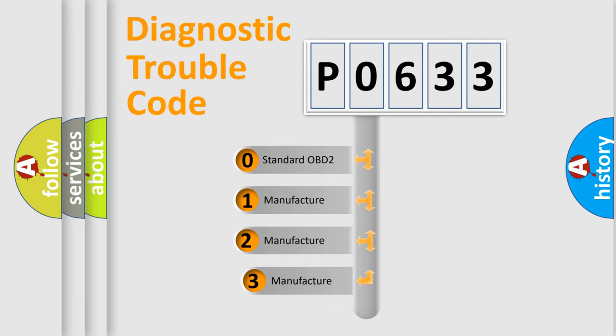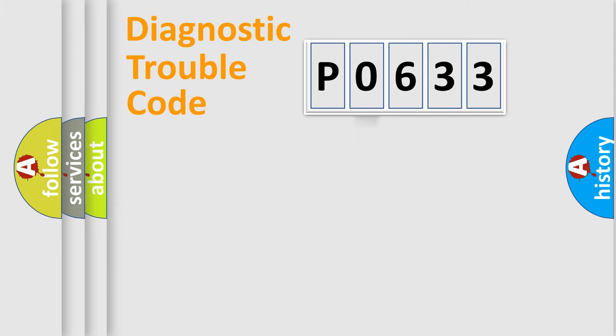If the second character is expressed as 0, it is a standardized error. In the case of numbers 1, 2, or 3, it is a more prestigious expression of the car-specific error.